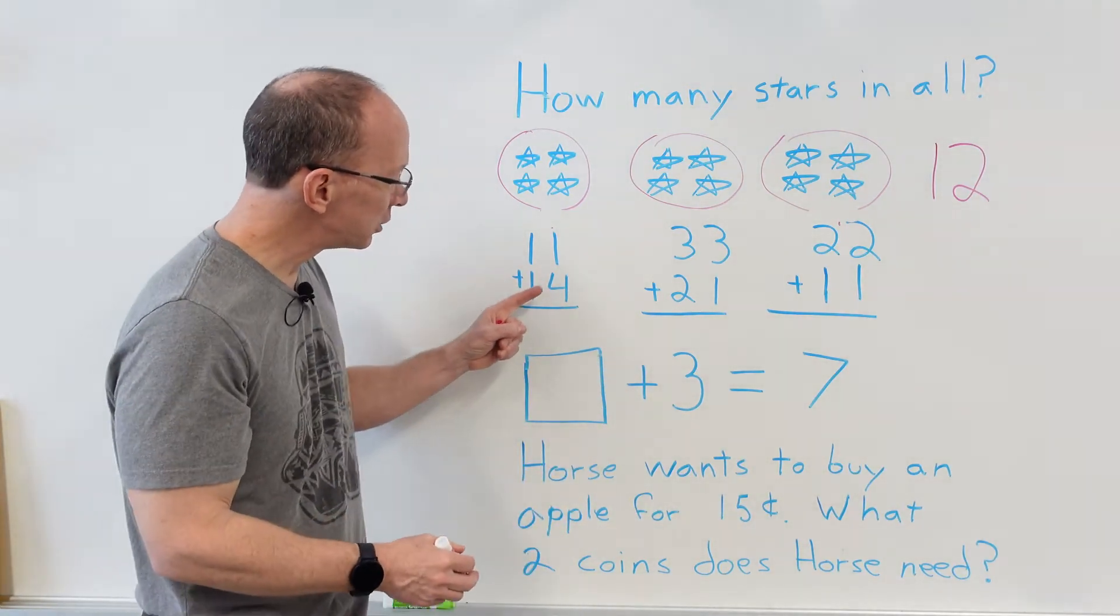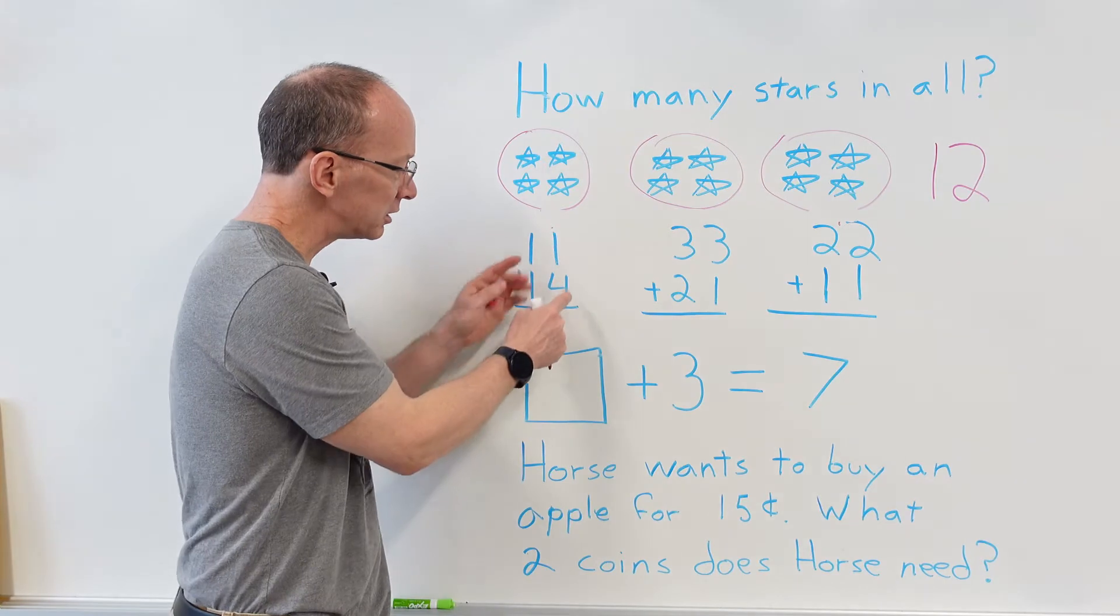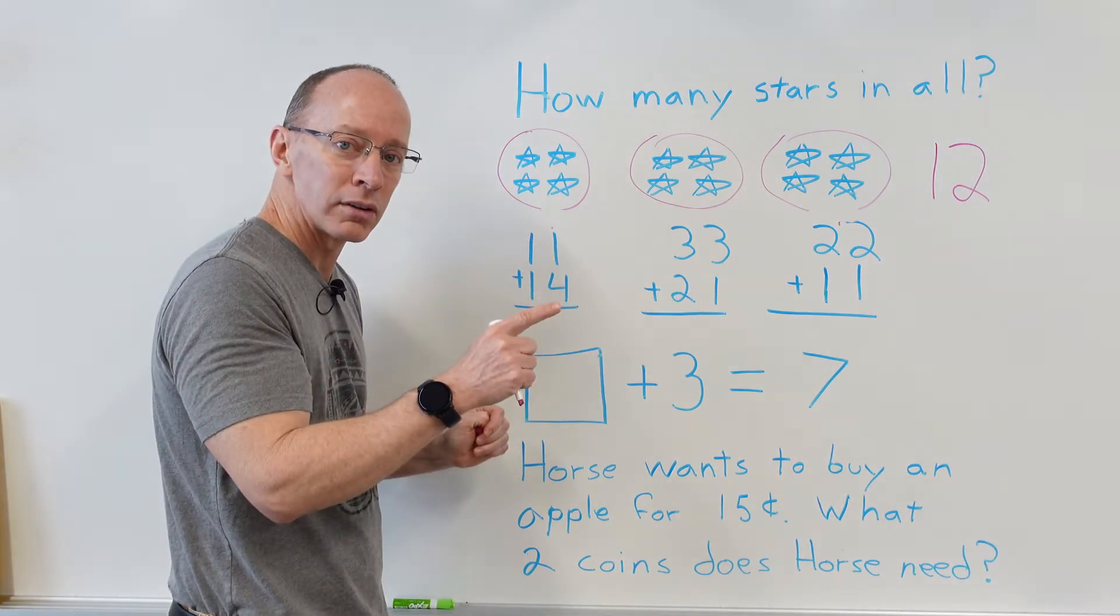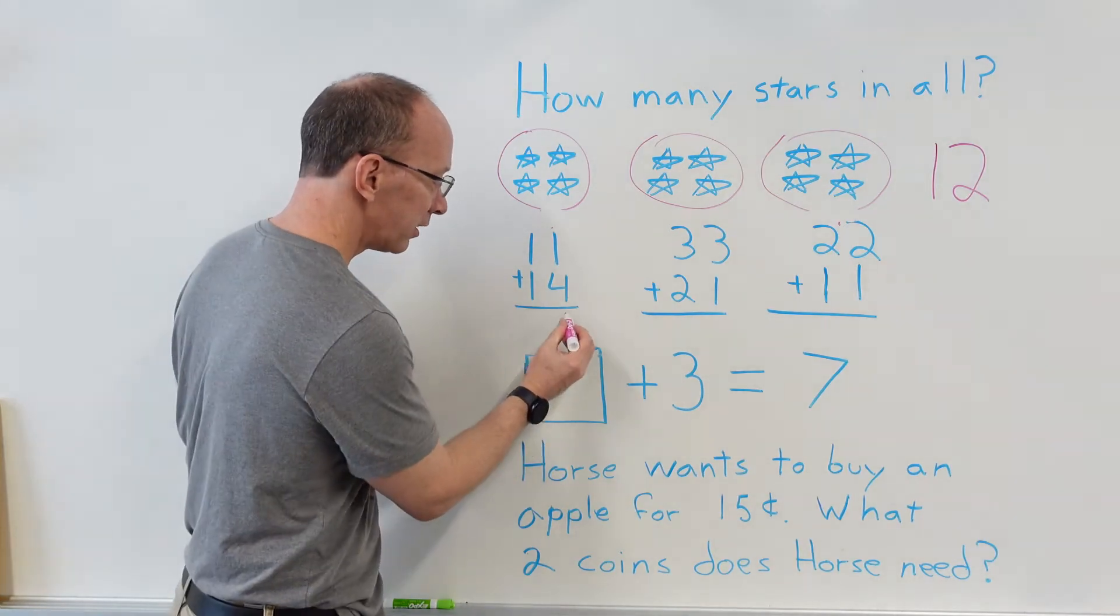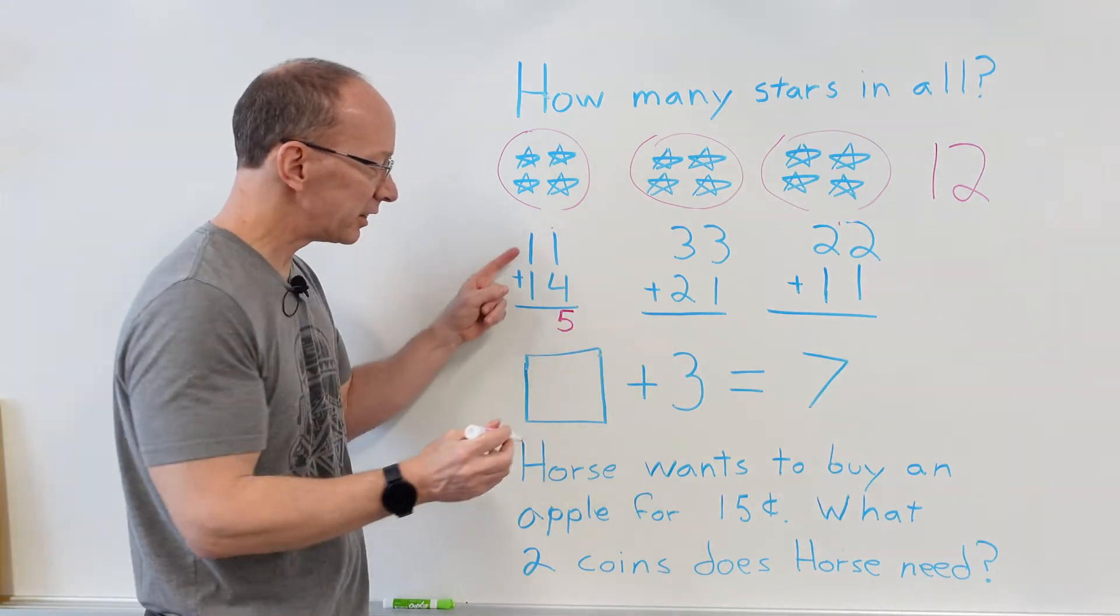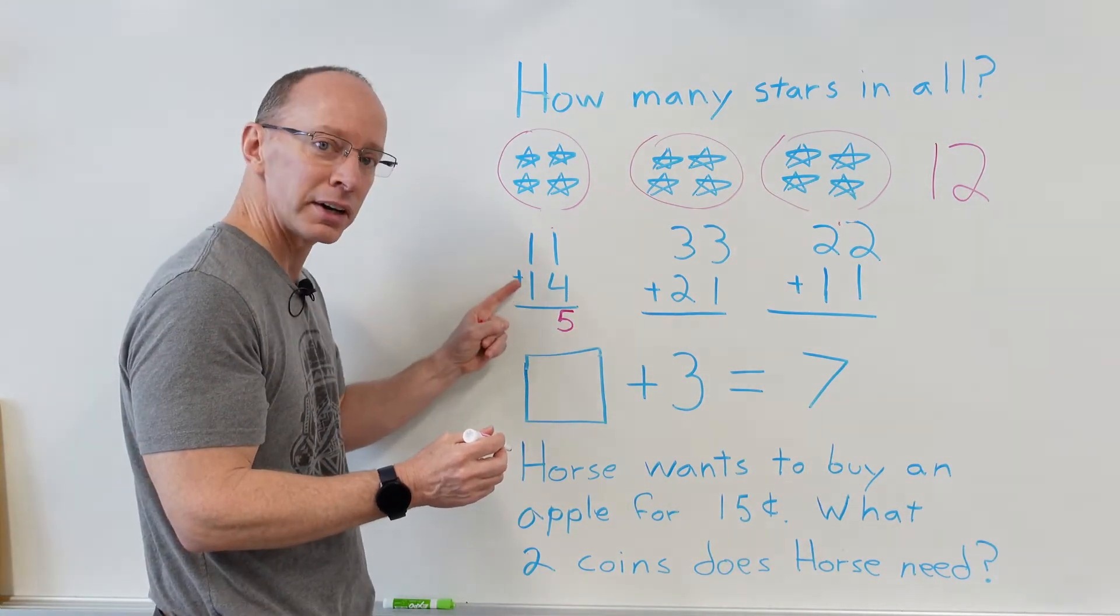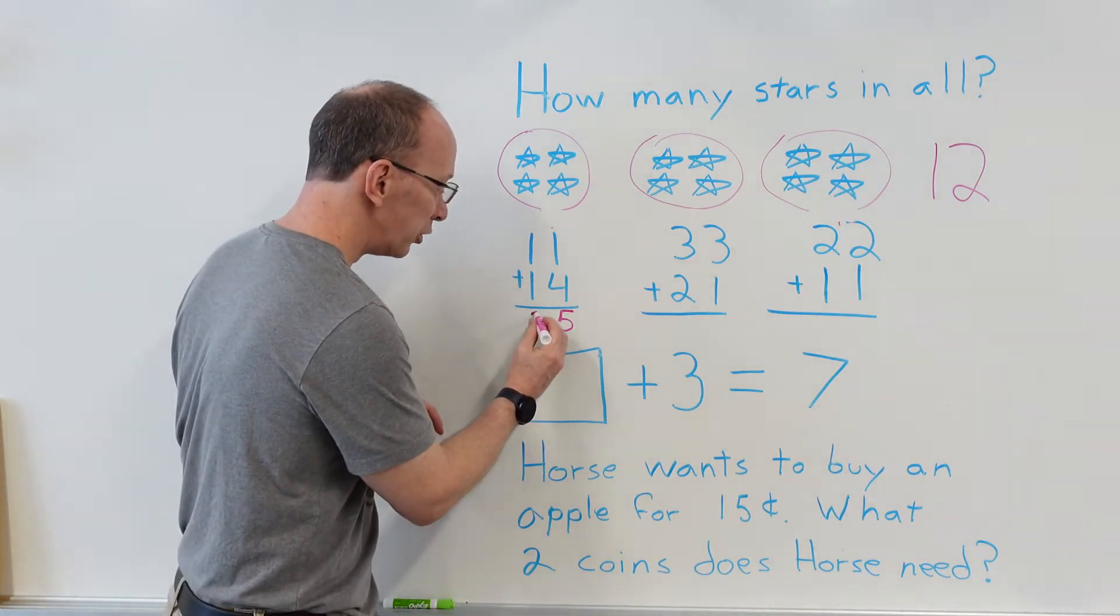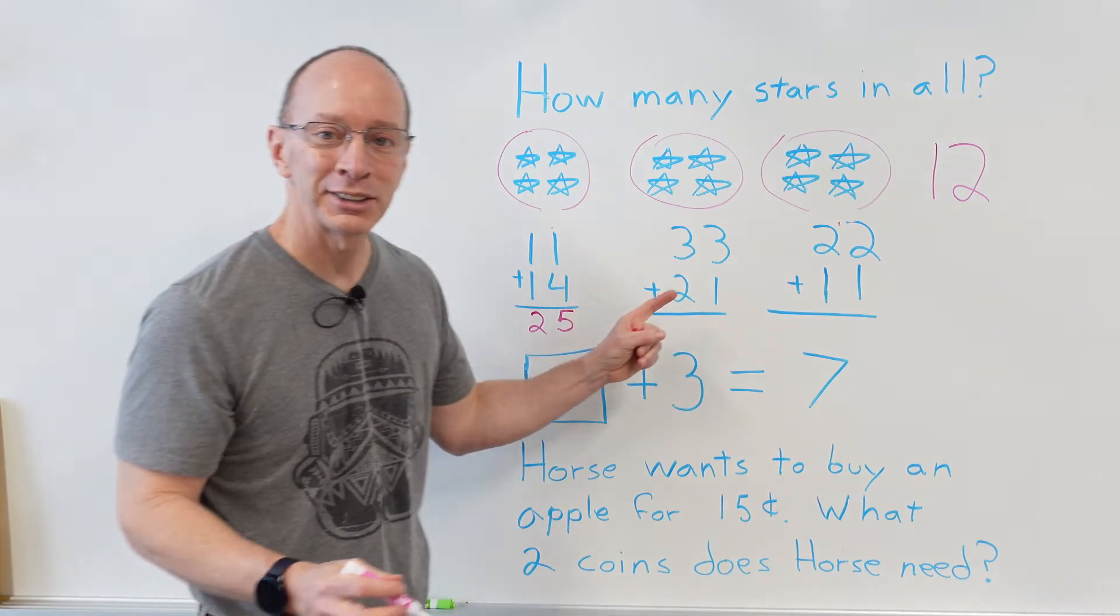So what I want to do right here is I'm going to add the ones. This is the ones group right here. So four plus one, what is that? Four, five, very good. All right, let's add the tens. This is in the tens group right here. So one plus one? Really good, that's two.